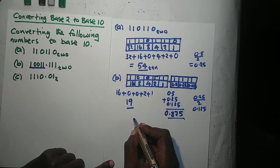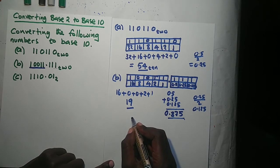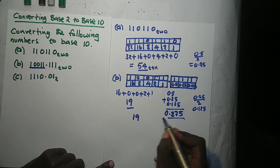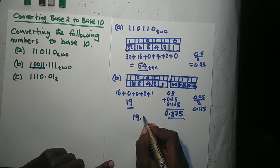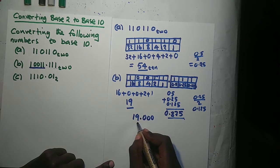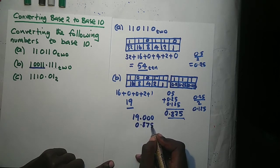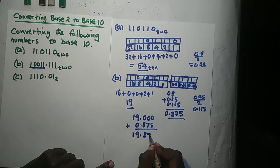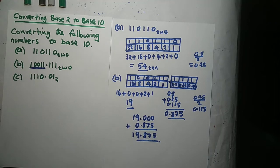Adding the whole and fractional parts together: 19 + 0.875 = 19.875. So our answer for this number is 19.875 in base 10. Let's move to the next example to further concretize the concept used in this part.